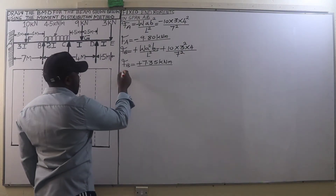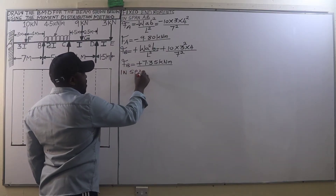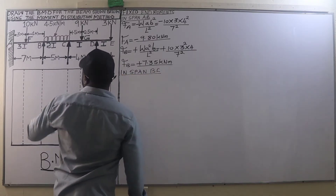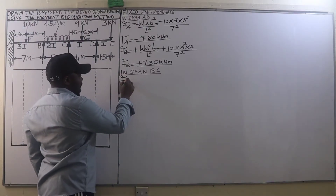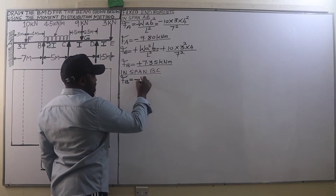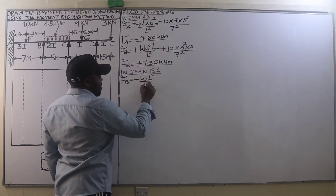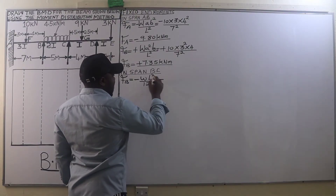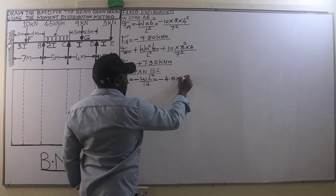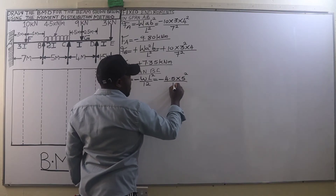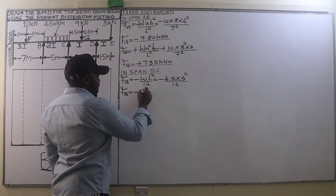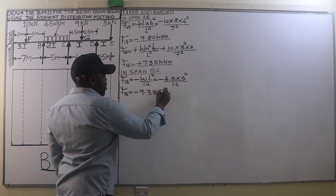Next we go to span BC. The fixed end moment at B, which is anti-clockwise, is given by the formula for UDL: negative W·L² divided by 12. Applying this: negative 4.5 kN/m multiplied by 5 squared, divided by 12, gives us a fixed end moment at B of negative 9.38 kN·m.